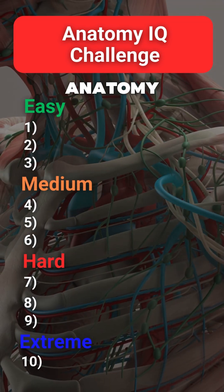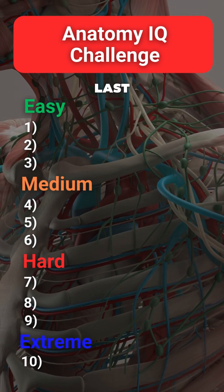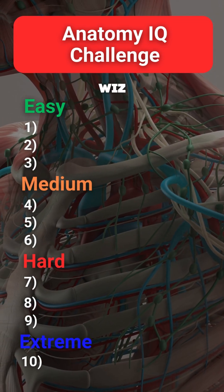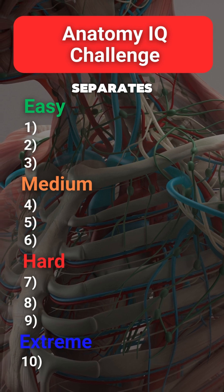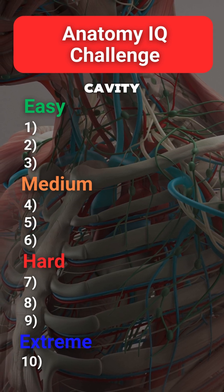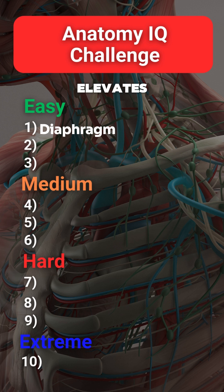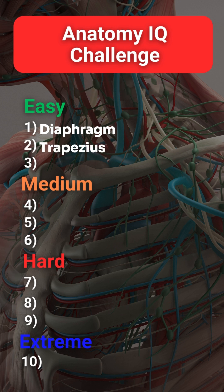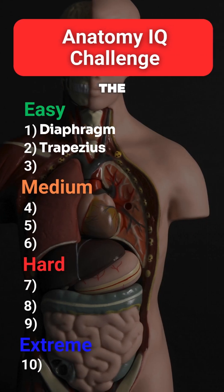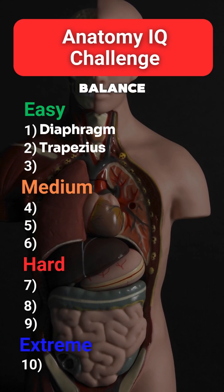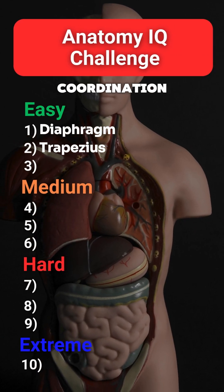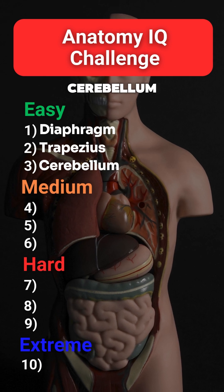Let's test your anatomy IQ — if you get the last one, you're a whiz! One: this separates the chest cavity from the abdominal cavity — diaphragm. Two: this muscle elevates the shoulder — trapezius. Three: the part of the brain responsible for balance and coordination — cerebellum.